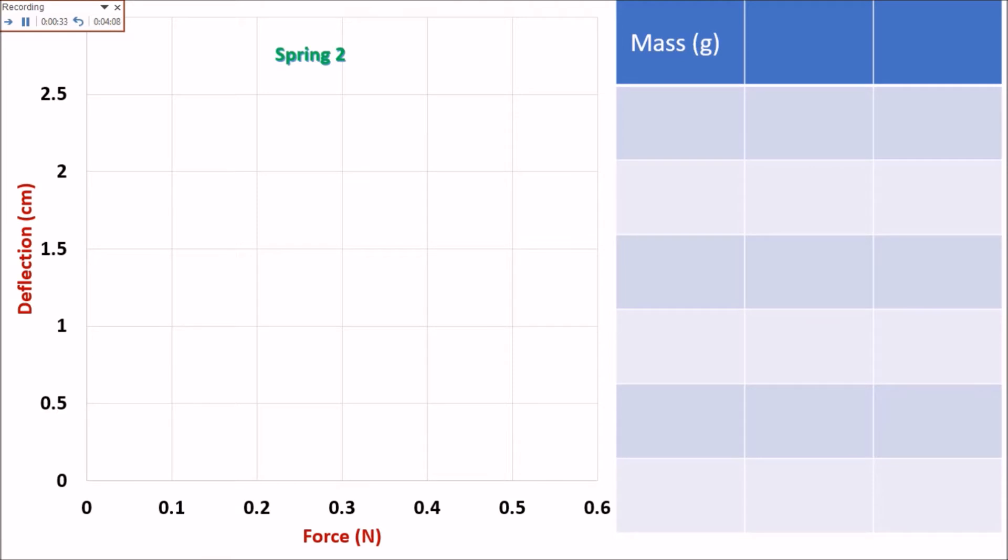Our table consists of mass, which we measured in grams, force in Newton. To get the force in Newton, we will multiply the mass by 0.00981 newton per gram, and the deflection in our Spring No. 2, which is in centimeters.